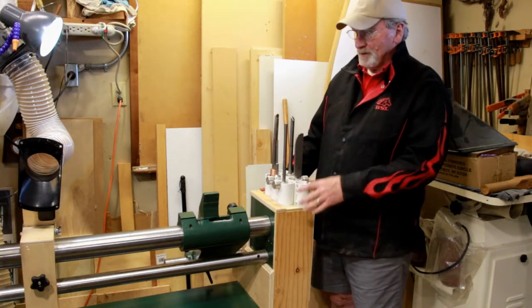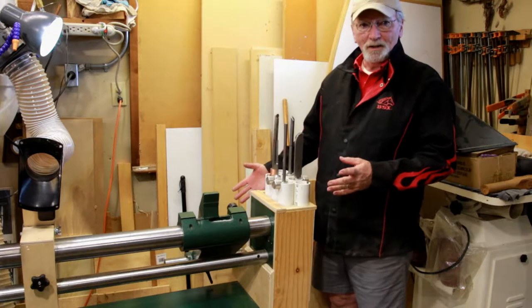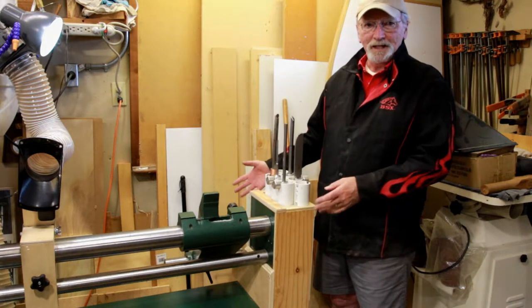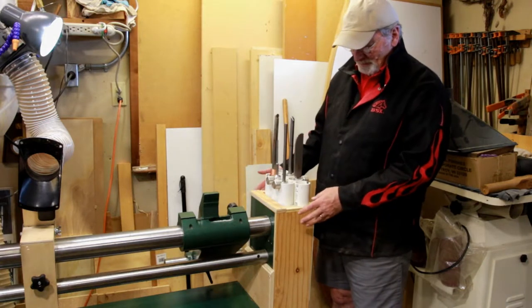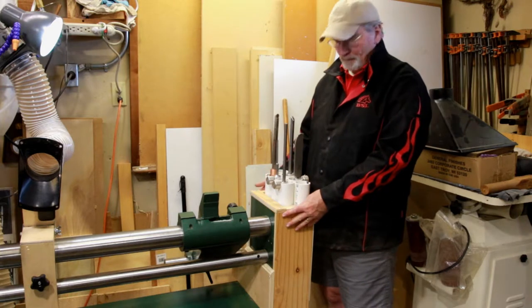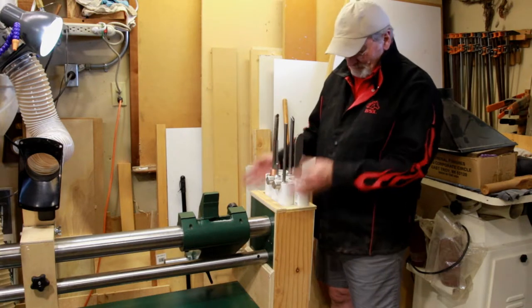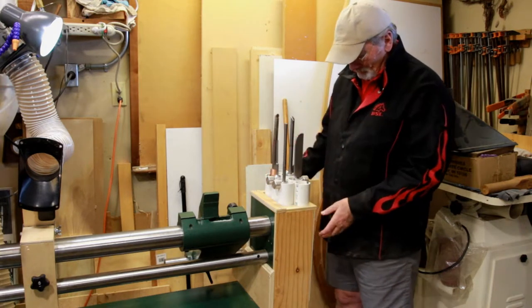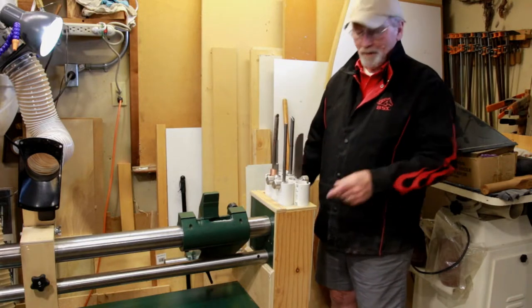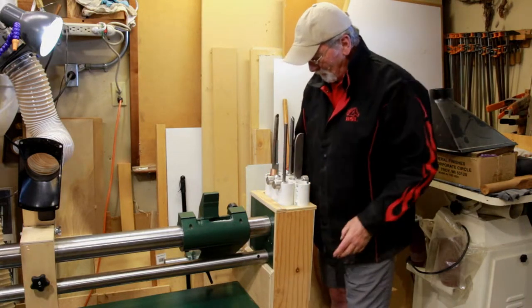As I've talked about in the past, I don't like drilling into the lathe to attach things. So I designed this to fit over the tailstock stand. It simply fits over it, screws around it, and can be removed by taking out these screws down here.